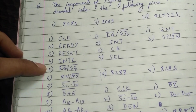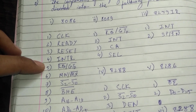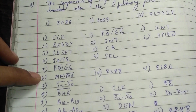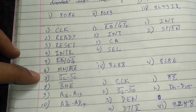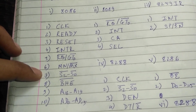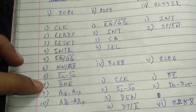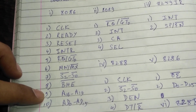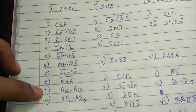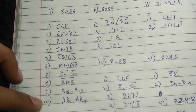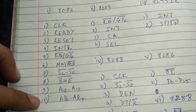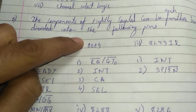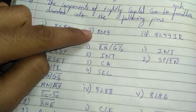The fifth pin is RQ bar slash GT0 bar, the sixth pin is MN slash MX bar, the seventh pin is S2 minus S0 bar, the eighth pin is BHE bar, the ninth pin is A16 to A19, and the tenth pin is AD0 to AD15. The second component is 8089.